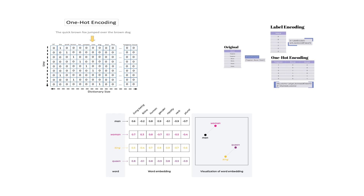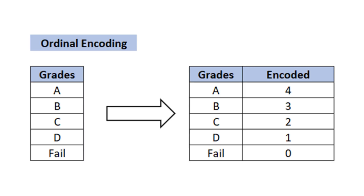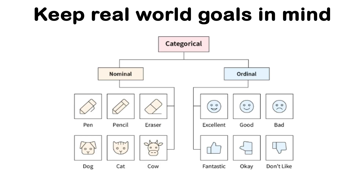Text variables need proper encoding — whether one-hot encoding, label encoding, or embedding. Ordinal features should preserve their natural order, and always handle unknown categories that might appear in your test data. Keep your real-world goals and intuition in mind when preparing your data, rather than doing so blindly — this is often more important than using a more powerful algorithm.